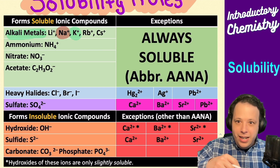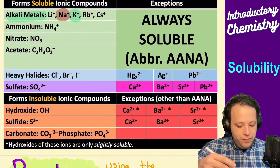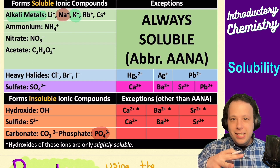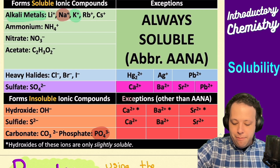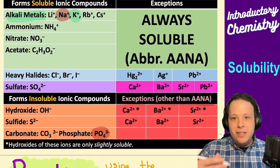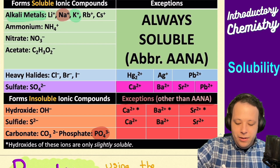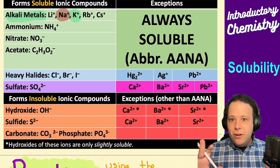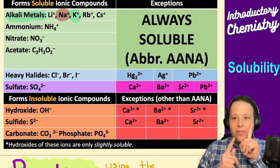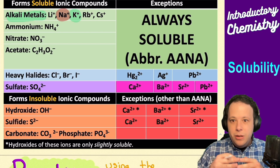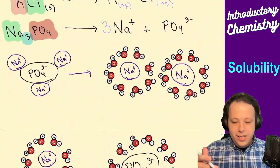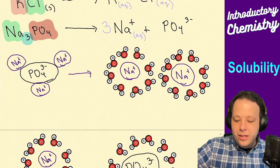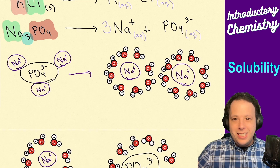You can also look at phosphates — phosphate is insoluble except when it's bound to an ANA ion. So in this case it is going to be soluble. You can look up either ion; they don't contradict each other, and as long as you find one on the chart, it will obey that rule.